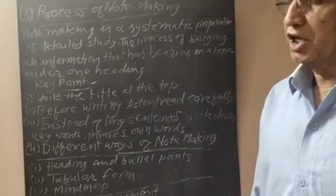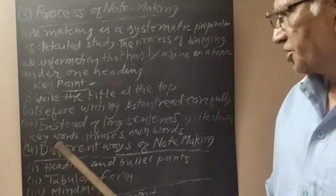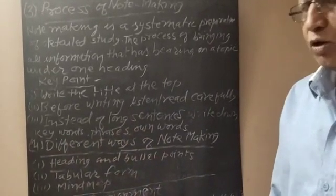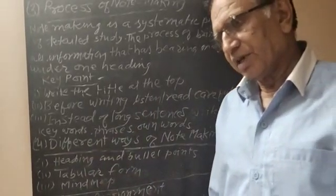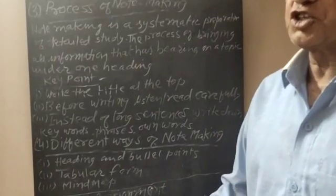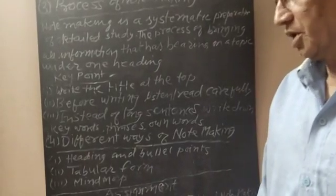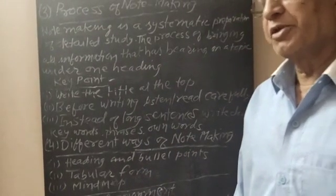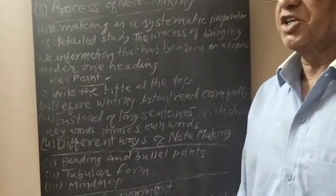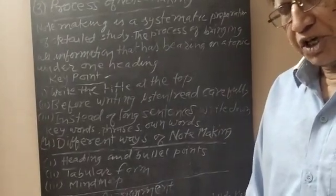And instead of long sentences, write down keywords, phrases, own words, own language. It is a condensed language. Condensed means in summary language, in a very short form, note making. Because it is taken from different books, we cannot write the language as it is. It is our language who is making the note.